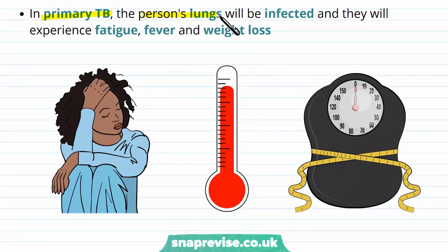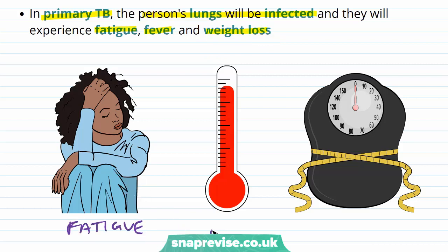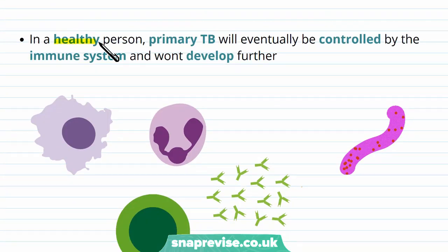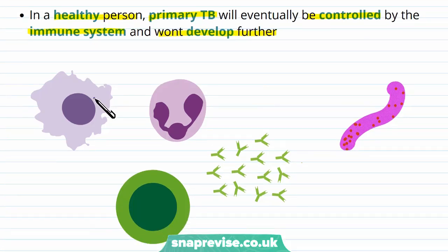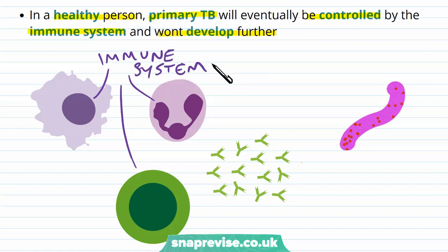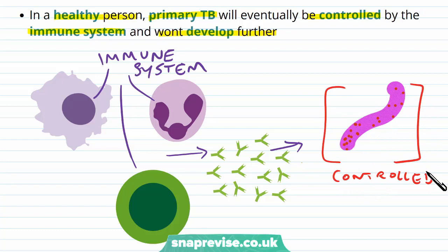In primary TB, the person's lungs will be infected and they'll experience fatigue, fever, and loss of weight. Although these symptoms can be found in other diseases, they tend to show up in the first infection of TB. In a healthy person, the primary TB would eventually be controlled by the immune system, even if it isn't completely cleared, and it won't develop any further. The immune cells will recognise the infection and, although they may not completely clear it, they will provide methods to keep it in a relatively stable environment.